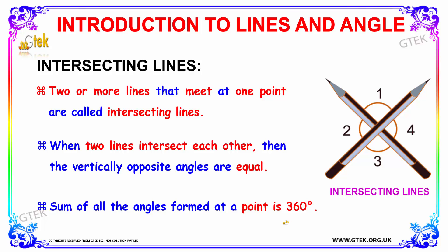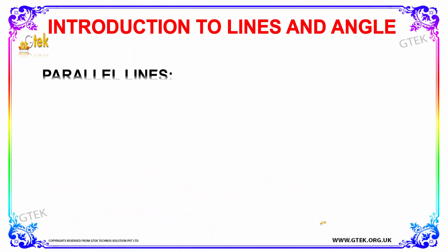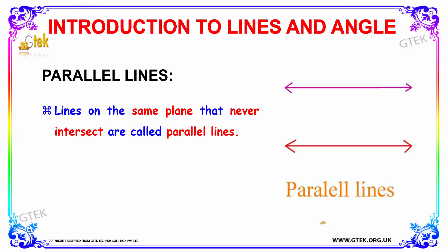Now let's discuss about intersecting lines. Intersecting lines are two or more lines that meet at one point. When two lines intersect each other, the vertically opposite angles are equal, and the sum of all angles formed at that point is 360 degrees. Parallel lines are lines that are on the same plane but never intersect — you can see how parallel lines appear.